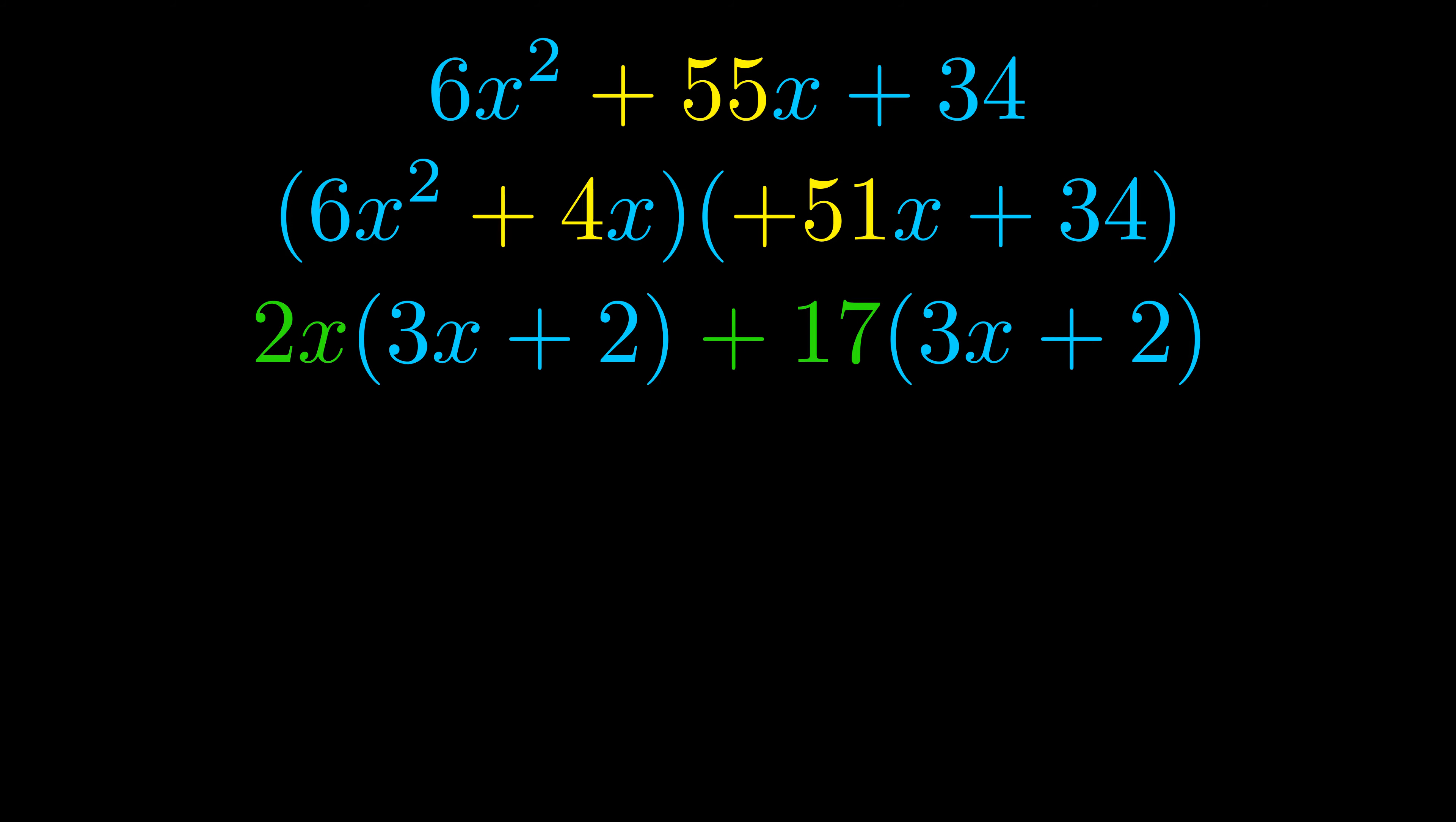Notice also how what remains inside of the parentheses is the same in both cases. The blue values are the same. Those blue values will become one of our factors and we will combine the two green values, the GCFs that we pulled out, to get the other one. And that is our fully factored equation.